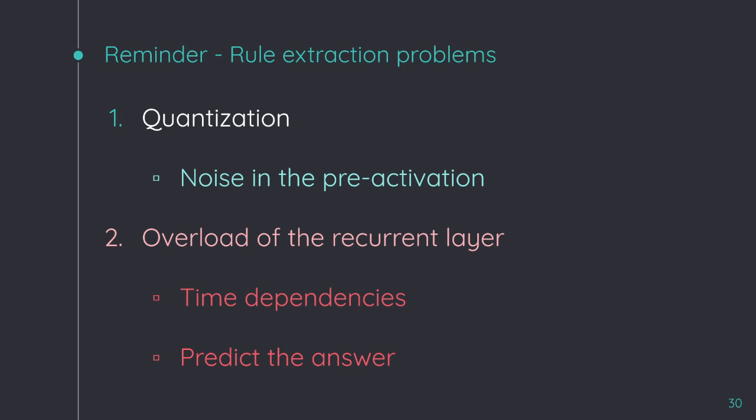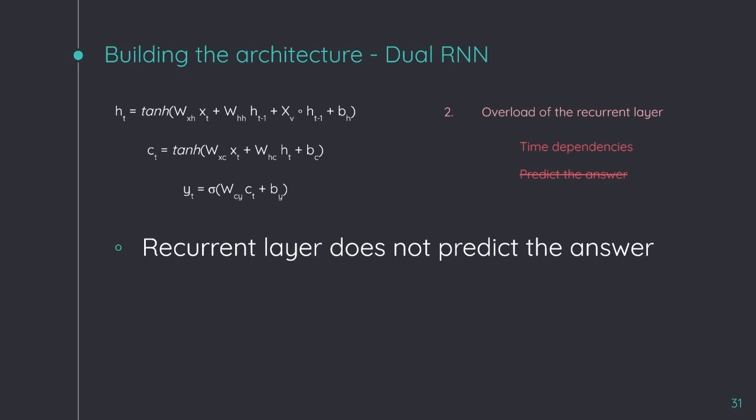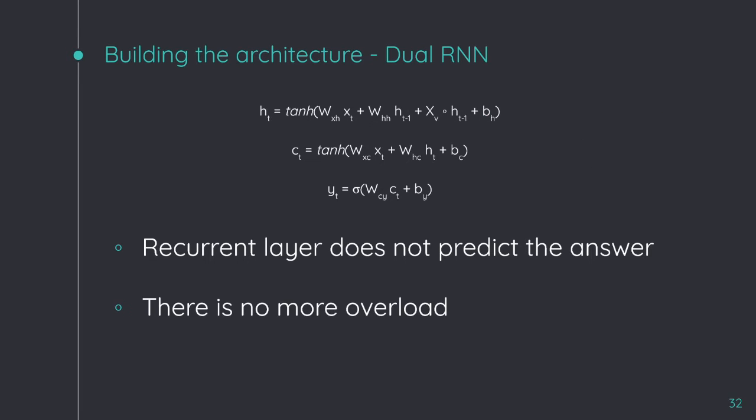Remember that the second problem with the rule extraction procedure is the overload of the recurrent layer, because it must learn the time dependencies and also predict the answer. Now, the recurrent layer does not predict the answer, because it is just the input to a feedforward network. Thus, there is no more overload and the second problem is also solved.